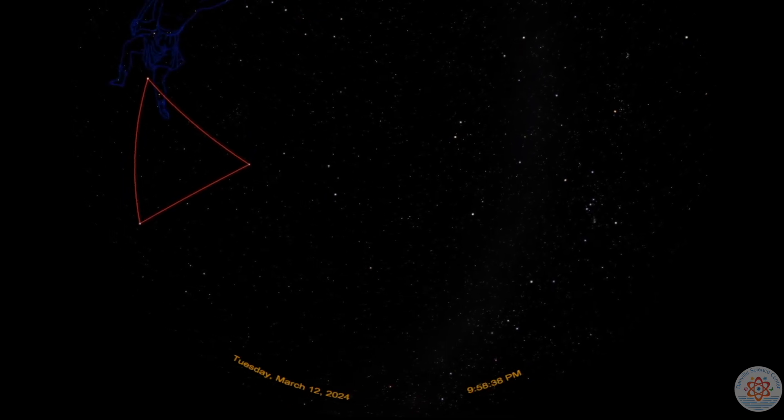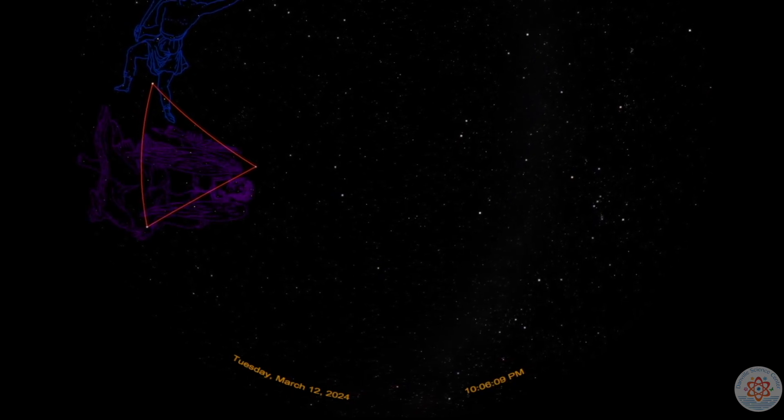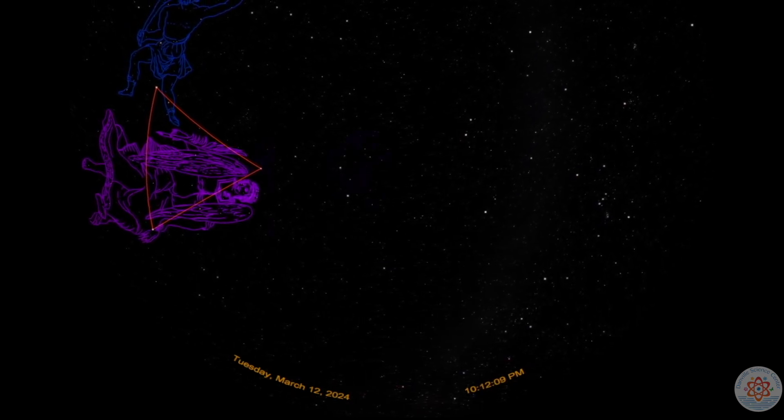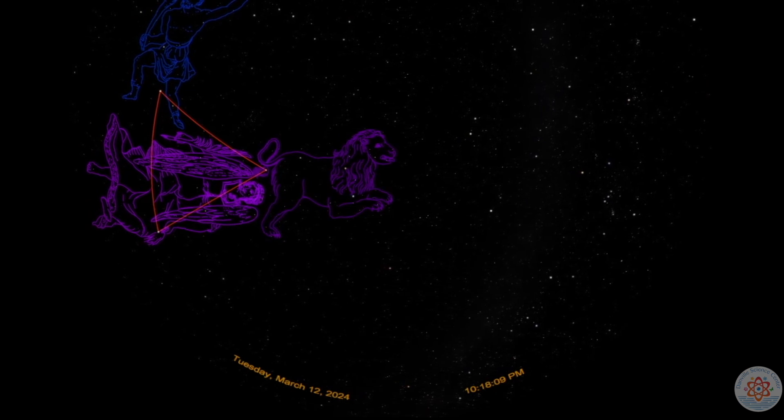Arcturus belongs to Boötes the Herdsman, Spica is the brightest star in Virgo the Maiden, and Denebola lies within the King of Spring, Leo the Lion.